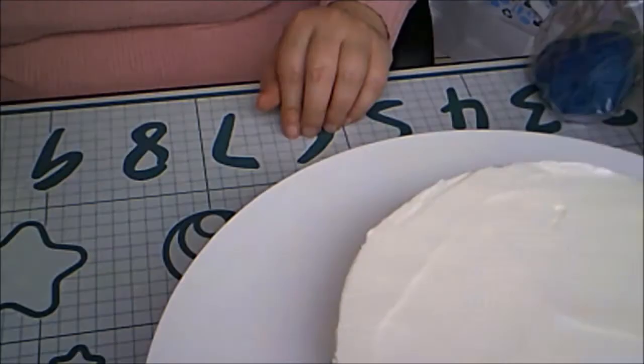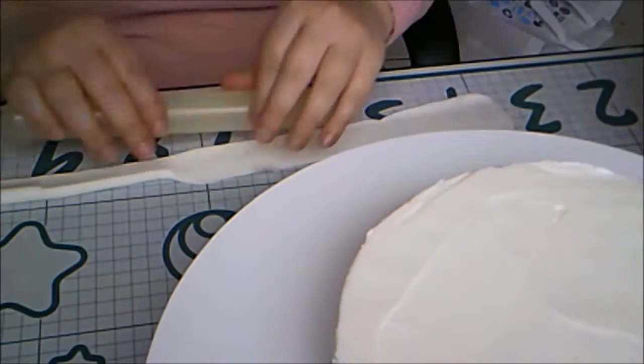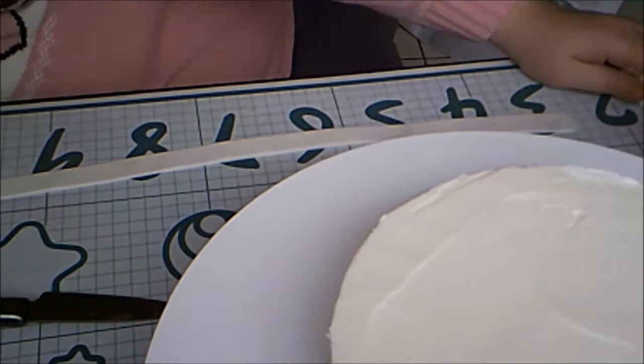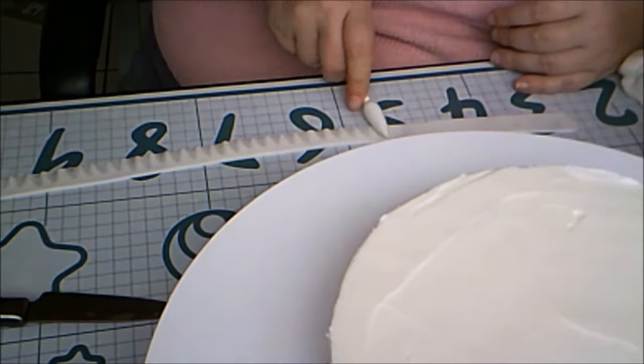Then I roll out a strip of white fondant and cut a strip. Then I make ruffles with a pointed sculpting tool and wrap it around the bottom of the cake.